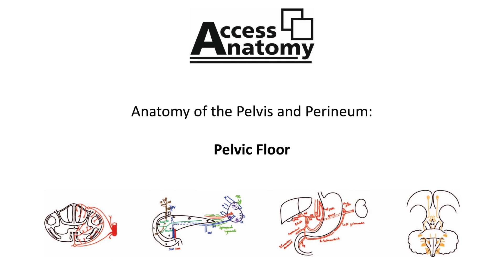Immediately above coccygeus, but not considered part of the pelvic floor, as it leaves the pelvis via the greater sciatic foramen, is piriformis. So piriformis isn't part of this pelvic floor. If we now turn to levator ani, this is broader than coccygeus and forms the bulk of the pelvic floor muscle.